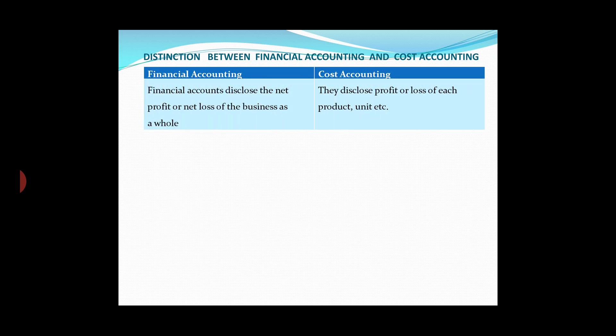Financial accounting discusses the net profit or net loss of the business as a whole, through statements such as the income statement and position statement. Cost accounting discloses the profit or loss of each product or unit.